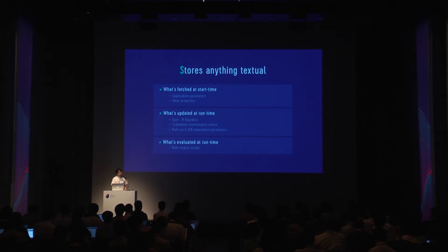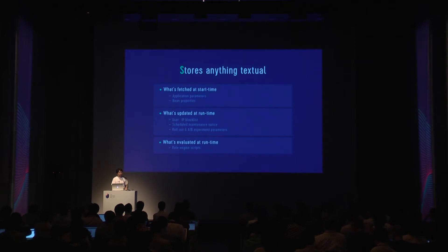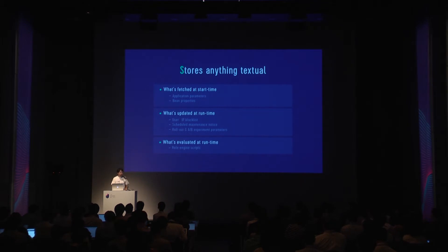Also, scheduled maintenance notices — it's useful when you want to tell your users that your service is under maintenance without restarting. And if you are doing A/B testing or a slow rollout of a certain feature, you may want to adjust the percentage parameter dynamically without restarting your services. Sometimes your business logic may change much more frequently than usual, and in such a case you could even store your business logic in Central Dogma, like in JavaScript.